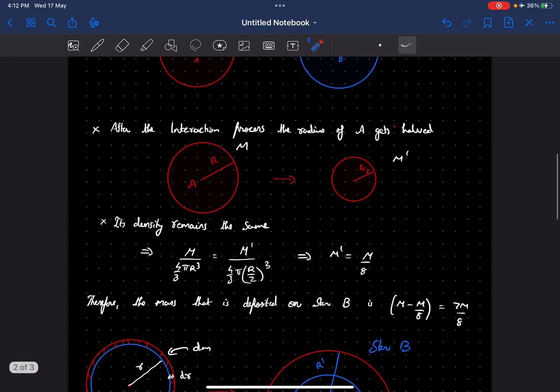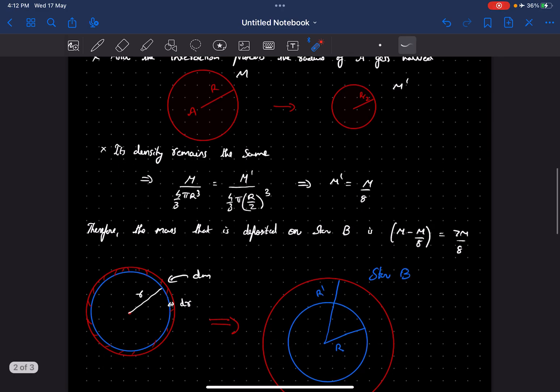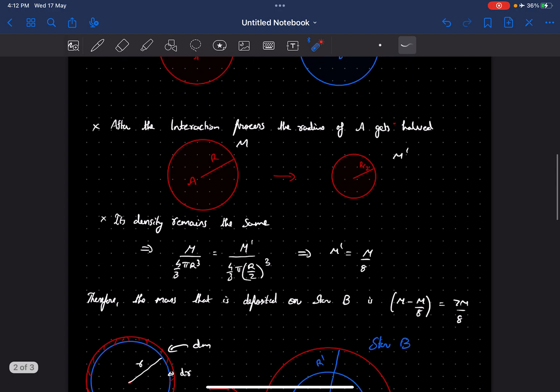In this problem we have an interaction process in which star A reduces its radius by half. In the process it loses some mass, and that mass is deposited onto star B. We are required to tell the ratio of the escape velocities afterwards. Let's do it step by step.